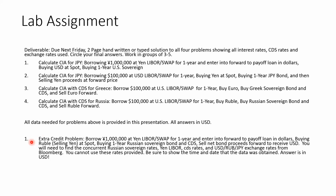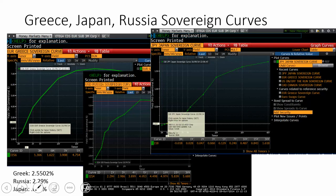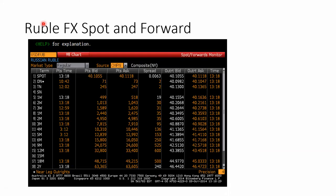To do all those problems, here is all the data you need. The Russian CDS rate is approximately 209 basis points (2.09%). The Greek CDS rate is 475 basis points (4.75%). Here are your interest rates — the one-year sovereign rates in Japan, Greece, and Russia. Here is the ruble spot and forward: spot market is 40.10 bid, 40.1118 ask, and the one-year forward is 43.